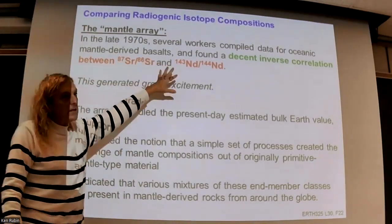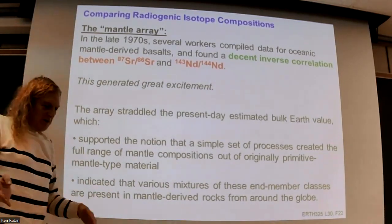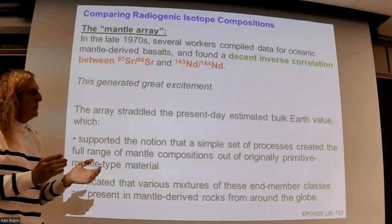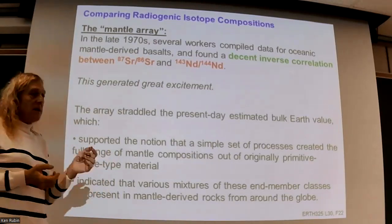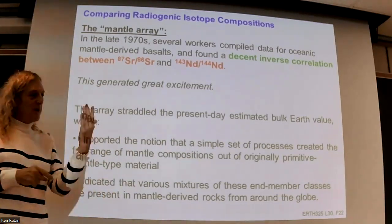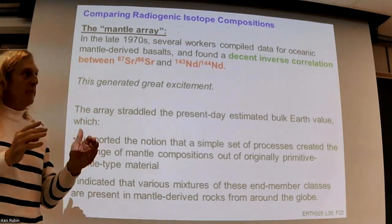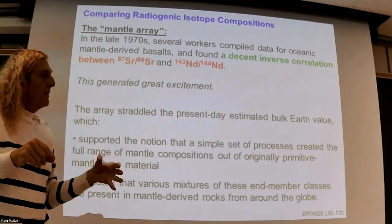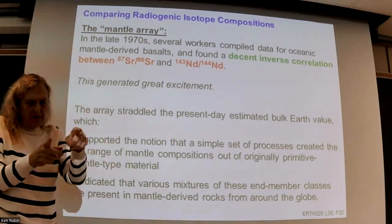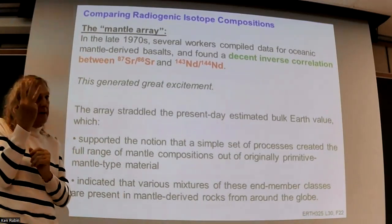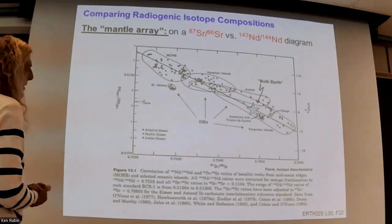By the mid-1980s, with more data accumulated, people started to say 'I don't really see a line anymore — I see a fanning out,' which caused people to think about additional processes and components. In the earliest papers, people saw this array and said everything we sample from oceanic igneous rocks — where we don't have to worry about continental crust contamination — is a mixture between something depleted and something not depleted. They initially thought the undepleted end was primitive mantle, but we can calculate CHUR/BABBY and age it forward in time, and it gives compositions more enriched isotopically than we'd expect from a simple two-component mixture — so right from the start people knew it involved at least three components.